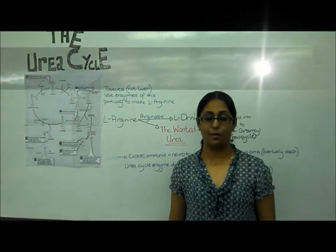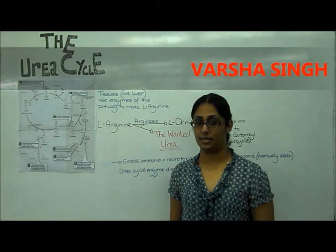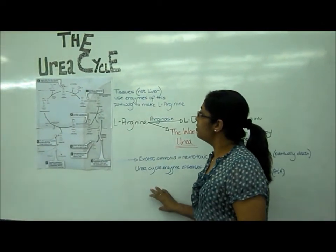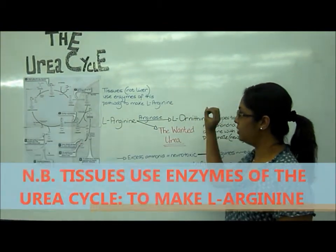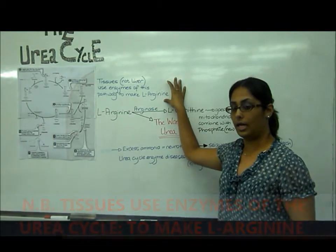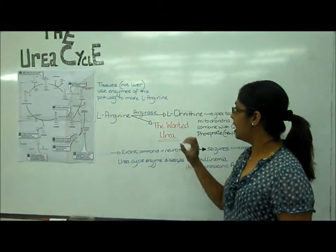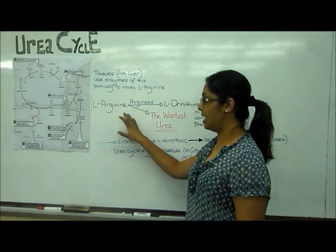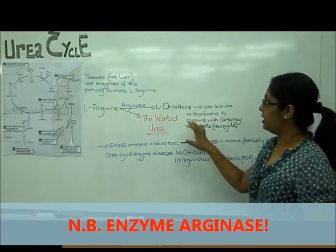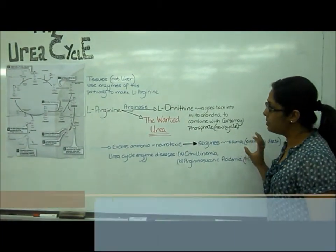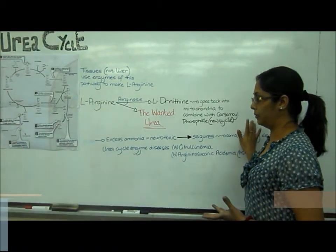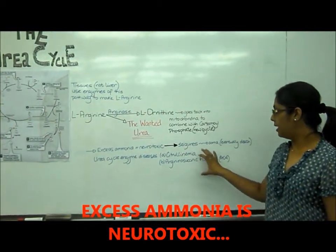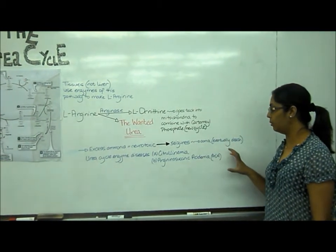Hi, my name is Varsha Singh, and I was chosen to be part of this mission because of my expertise in the urea cycle. My colleagues before me have done an excellent job. Now it's my turn to take you to the end of this mission. Tissues use enzymes of this pathway to make L-arginine — tissues not including the liver. The L-arginine is hydrolyzed to produce L-ornithine and urea. This entire reaction is catalyzed by the enzyme arginase. The L-ornithine produced goes back into the mitochondria, where it combines with carbamoyl phosphate and creates a new cycle. Excess ammonia in the blood is neurotoxic and can cause seizures; buildup can lead to coma and eventually death.